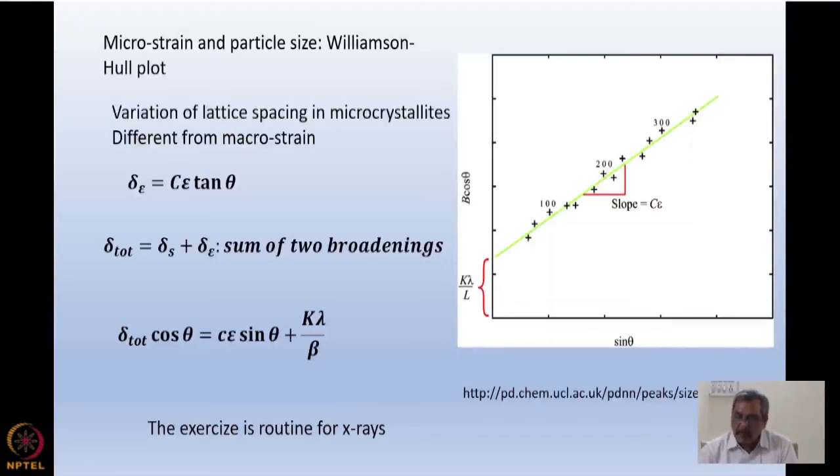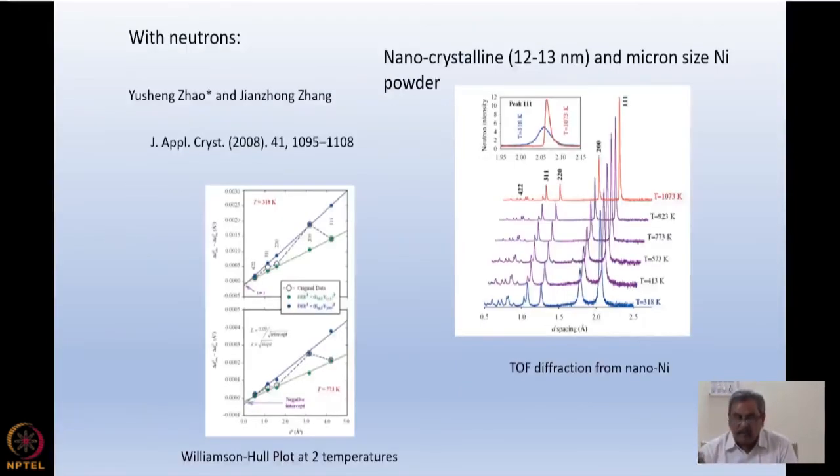But Williamson-Hull plot used for X-rays can also be used for neutrons. Not too many examples, but in recent days the Williamson-Hull plot has been used for nanocrystalline and micron size nickel powder.